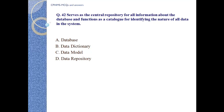Question number 42. Serves as the central repository for all information about the database and functions as a catalogue for identifying the nature of all data in the system. a. database; b. data dictionary; c. data model; d. data repository. Answer: B — data dictionary.